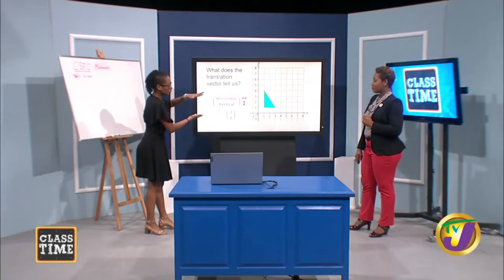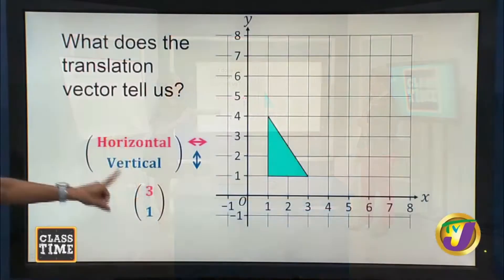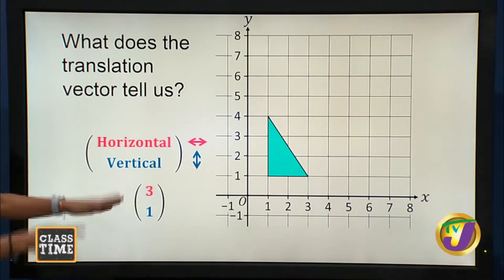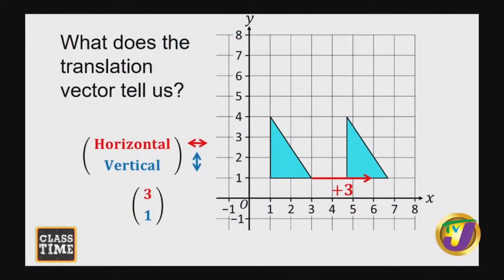Here we have our triangle — what do we call the original? It's called the object or pre-image. So here we have our object or pre-image. The translation vector is 3, 1. The three units are parallel to our x-axis, and the one unit is parallel to our y-axis. The three tells us it's moving three units to the right — each point moves three units to the right — and then each point moves one unit upward.